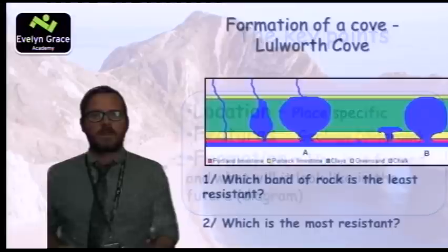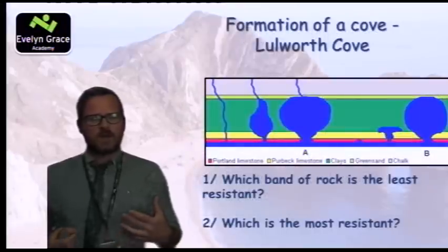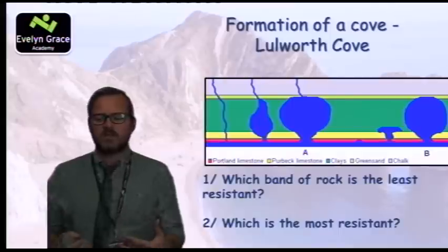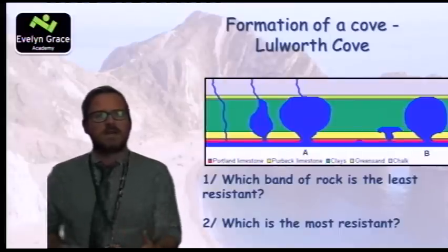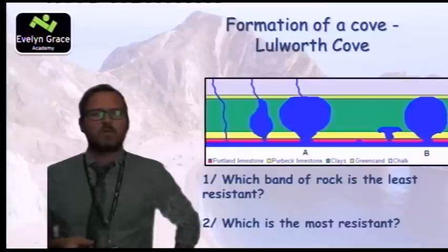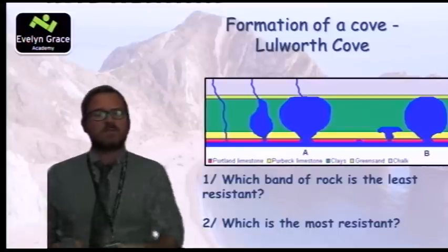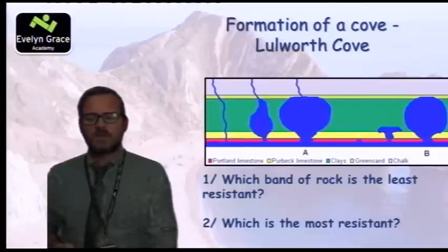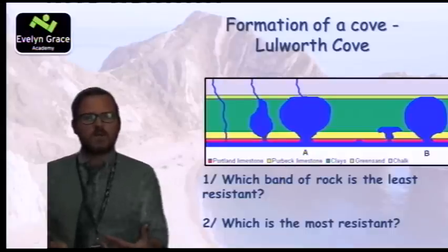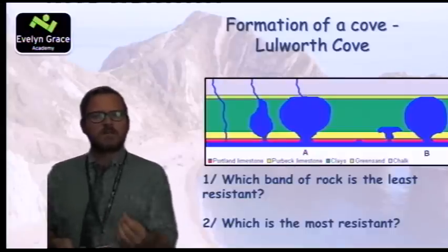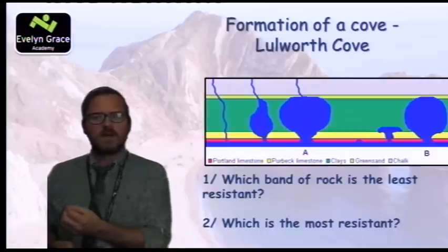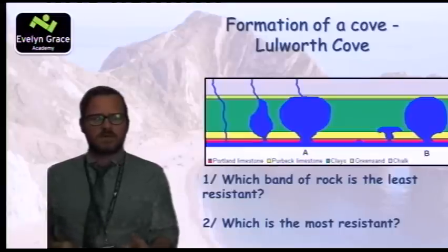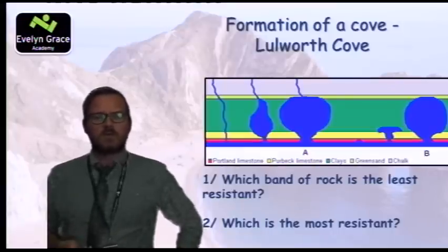For a level three you also need to know other coastal features. Dorset is an excellent area for this because it has such a dynamic coastline. Here is a diagram of the formation of a cove — Lulworth Cove, which is right next to Durdle Door. I want you to have a look at this picture — it tells you the different types of rock — and I want you to tell me which rock is the least resistant and which is the most resistant. Pause the video and then we'll go through the answers.